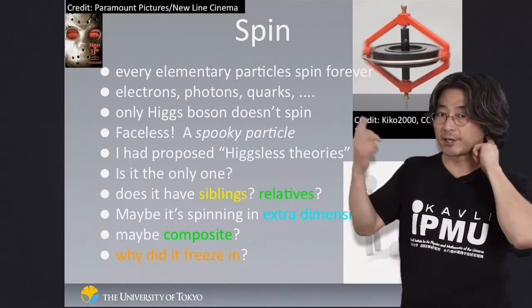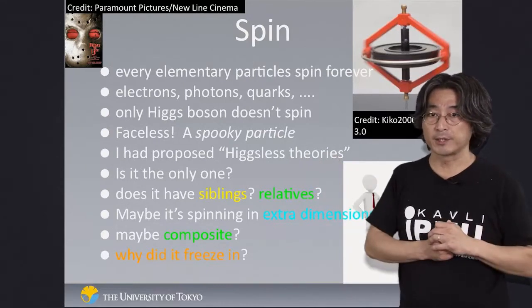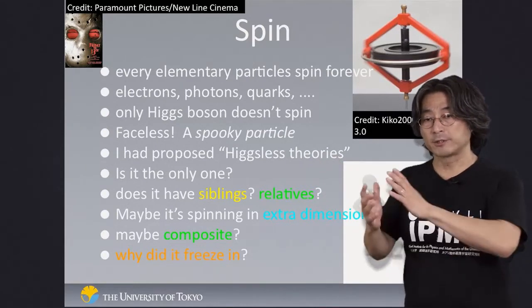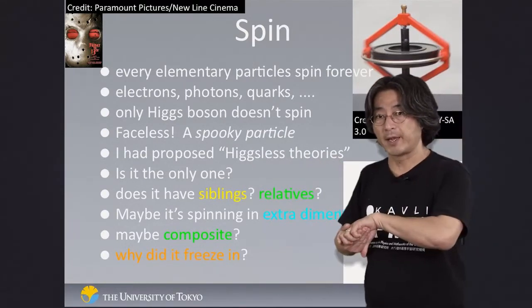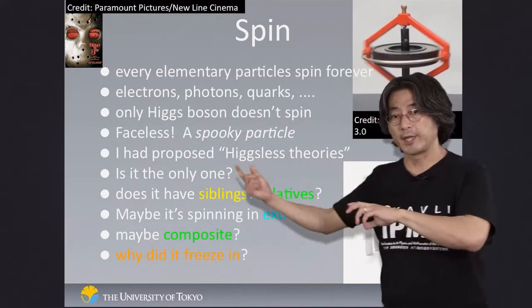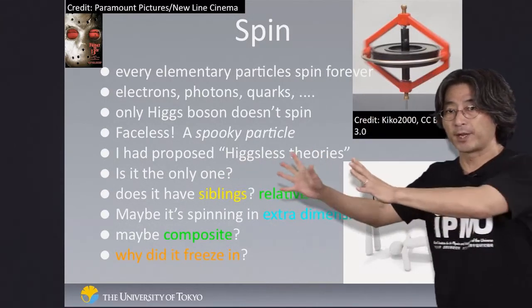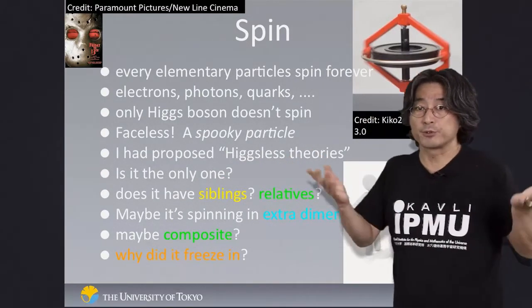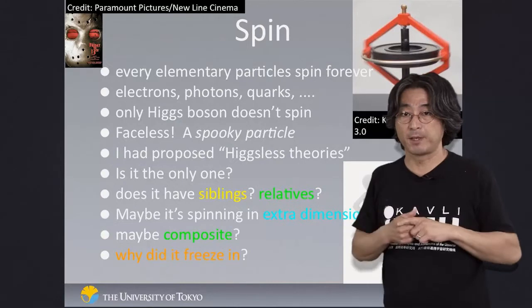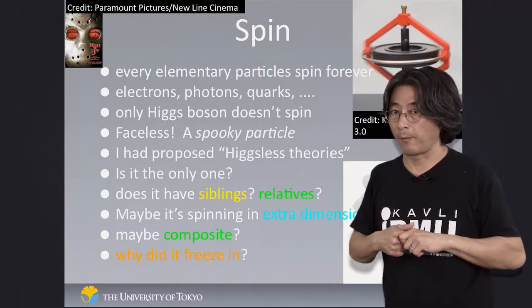Or maybe it is actually spinning, but we don't notice it because there are extra dimensions to space where the Higgs boson is spinning — but we don't get to see those extra dimensions, so we perceive it as spinless. Maybe that's what's going on.